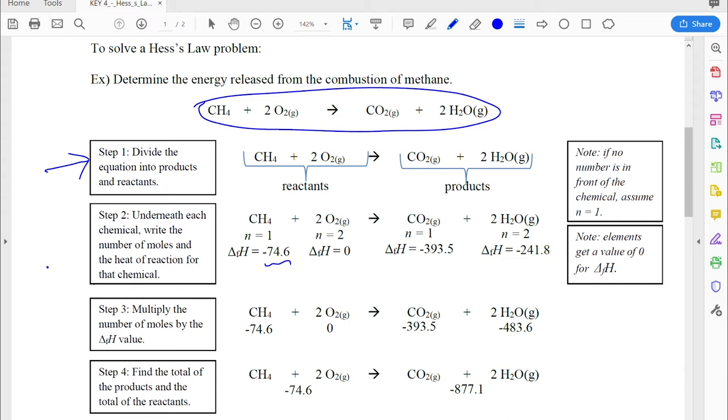Now one thing you're going to notice is if you try to find something like oxygen on your table on page five, it's not there. And that's an important note to remember when you're doing this. Elements don't get a value of delta FH0. They're zero. They don't take any energy to form because they're not compounds. So I went through and did that for the other two compounds that I had here, CO2 and H2O.